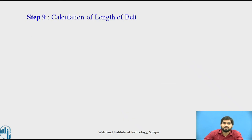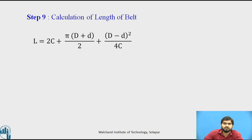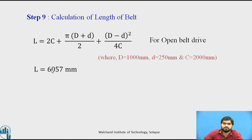Step 9: Calculate the length of the belt. Since we are designing an open belt drive, we use the open belt length formula with center distance C, and diameters D and d. Substituting all known values, the belt length L = 6057 mm.